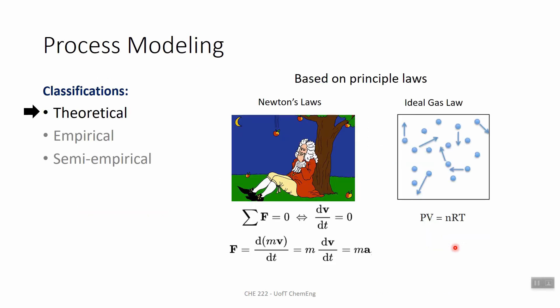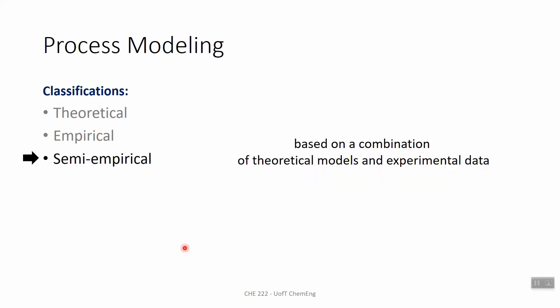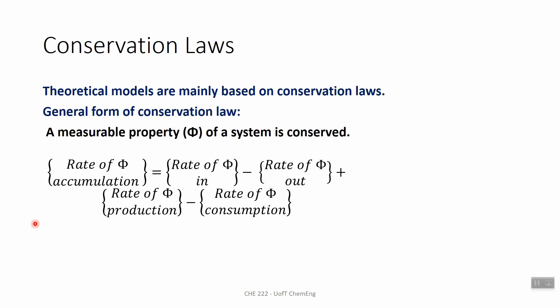Now let's start the topic of this session: process modeling. There are three different types — theoretical, empirical, and semi-empirical. For this course we will mostly use theoretical modeling, which is based on fundamental laws such as Newton's law or the ideal gas law, relating physical or chemical phenomena to mathematical equations. Empirical modeling is based on experimental data — you collect many data points and fit them to a correlation. Semi-empirical modeling combines theoretical models and experimental data.